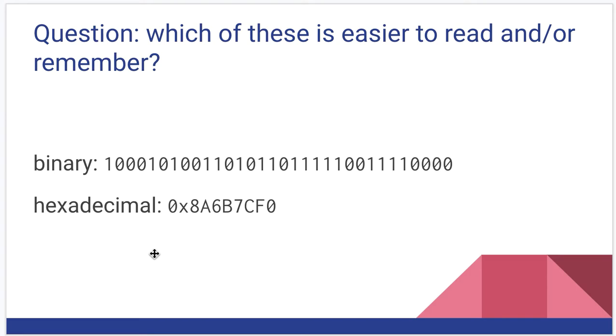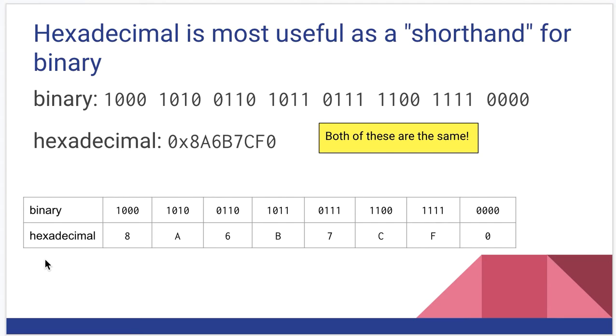Now, not really an exercise for you, but just a mental question. Which of these two things is easier to read? Which one is easier to remember? Is it this long binary string or is it this shorter hexadecimal string? Well, obviously, it's the shorter hexadecimal string. It's fewer symbols to remember, it's more compact. I look at the binary and my eyes cross. The hex is still not great, but it's way better than this.